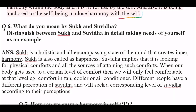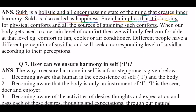What do you mean by Suk and Subita? Suk is a holistic and all-encompassing state of the mind that creates inner harmony — also called happiness. Subita implies looking for physical comforts and all sources of attaining such comforts. When our body gets used to a certain level of comfort, we will only feel comfortable at that level — for example, comfort in fan, cooler, or air conditioner. Different people have different perceptions of subita and will seek a corresponding level accordingly.